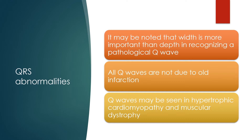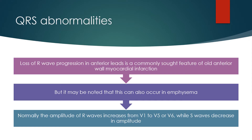All Q waves are not due to old infarction. Q waves may also be seen in hypertrophic cardiomyopathy and muscular dystrophy. Loss of R wave progression in anterior leads is a commonly sought feature of old anterior wall myocardial infarction, but it may also occur in emphysema. Normally, the amplitude of R waves increases from V1 to V5 or V6 while the S wave decreases in amplitude.